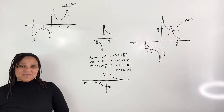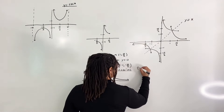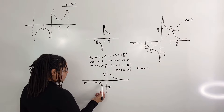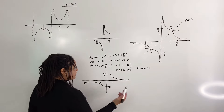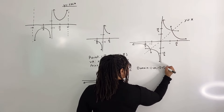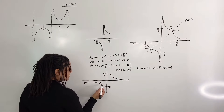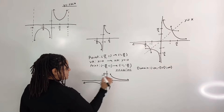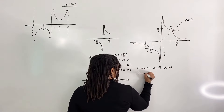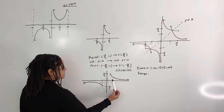Now it is easy for us to identify the domain and range of inverse cosecant. The domain is from negative infinity to negative 1, union from 1 to infinity. And the range is from negative pi over 2 to 0, union from 0 to pi over 2.